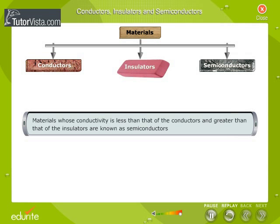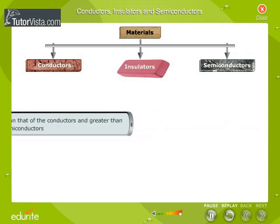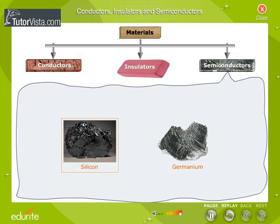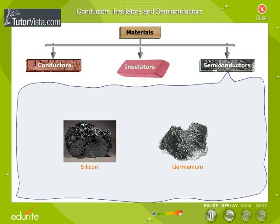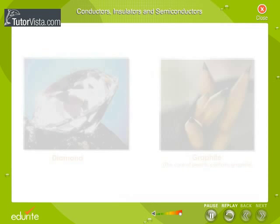Materials whose conductivity is less than that of the Conductors and greater than that of the Insulators are known as Semiconductors. Silicon and Germanium are examples of Semiconductors.